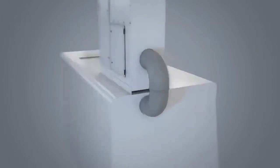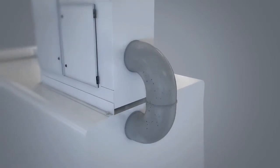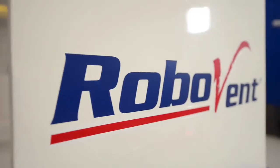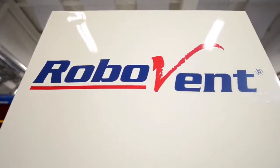Now how this works is mist and smoke are drawn up into the Clarion unit, where the coolant is captured and recirculated back into the machining center.